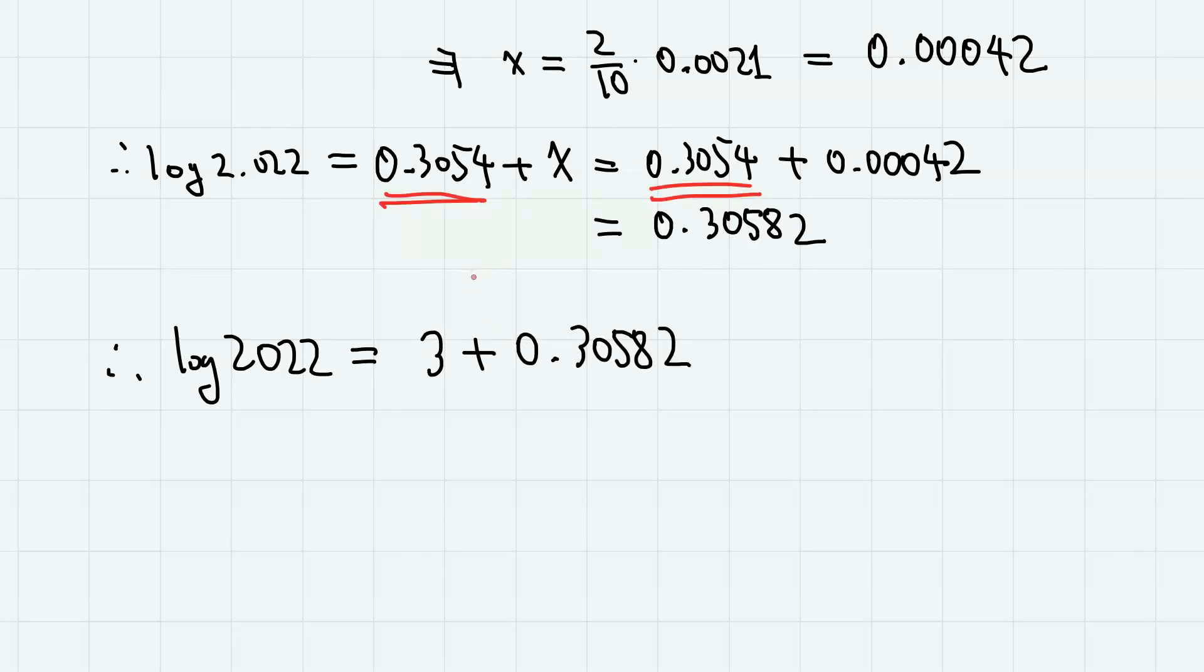All log values in this problem are given up to four decimal digits, so let's write down our answer similarly. Up to four decimal digits, we have 3.3058 as the approximate value of log 2022.